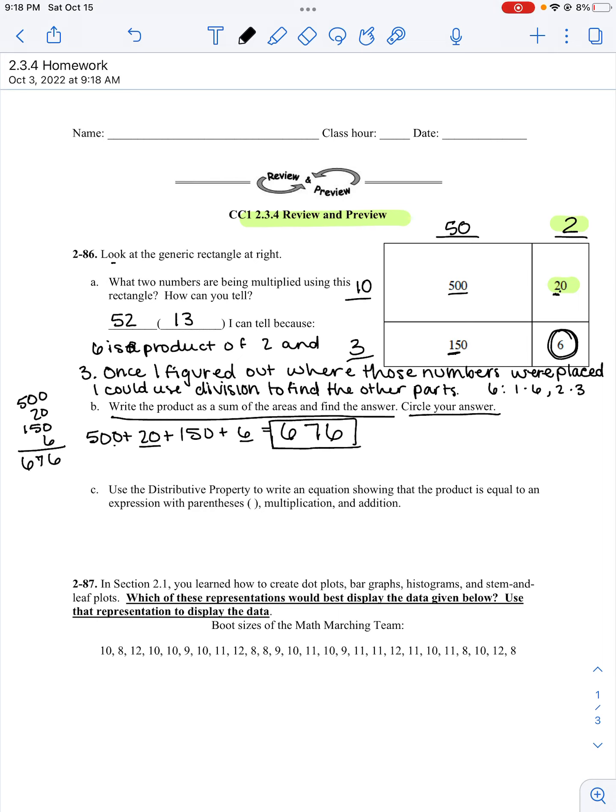Part C says to use the distributive property to write an equation showing that the product is equal to an expression with parentheses, multiplication, and addition. What this is, is I'm going to write 13, that's one of my numbers. But I'm going to use the expanded form of 52. That's the distributive property. It tells me that I'm multiplying 13 by 50 and by 2. That equals 500 plus 20 plus 150 plus 6, which then equals 676.